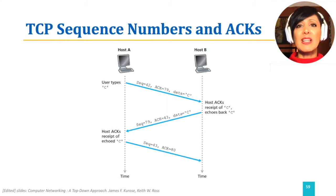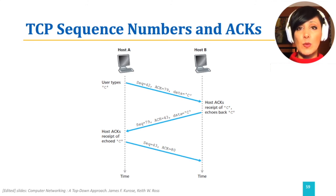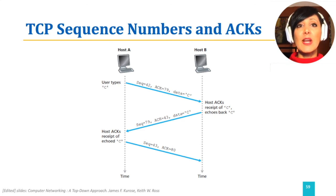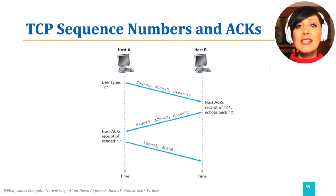Assume that B will echo 'C' as well. The communication from B to A will include sequence number 79, as previously announced by host A, and will also include ACK equals 43, because it has received byte 42 — letter C — from A, and is now waiting for byte 43. If A receives letter C and echoes another letter C, the communication will continue with sequence number 43 and ACK 80. Note that the acknowledgements are not separate segments and are included in data segments — this is called piggybacked ACKs.